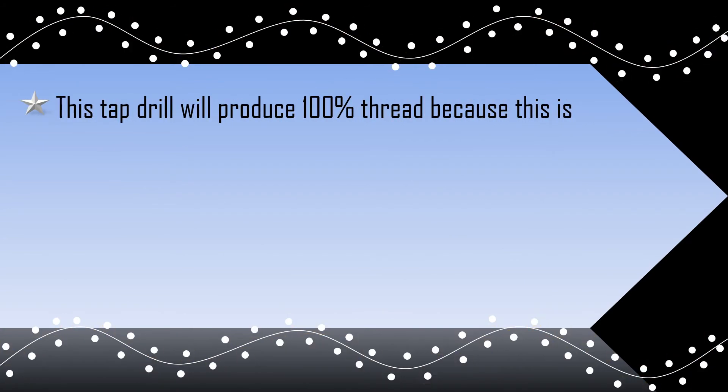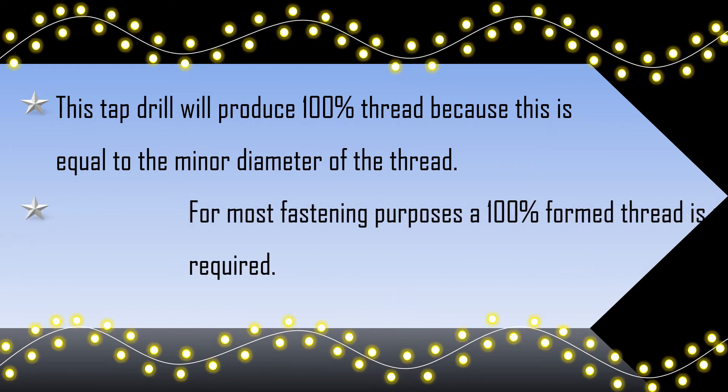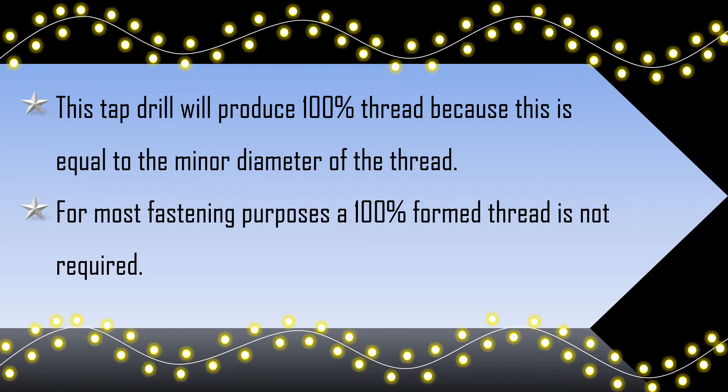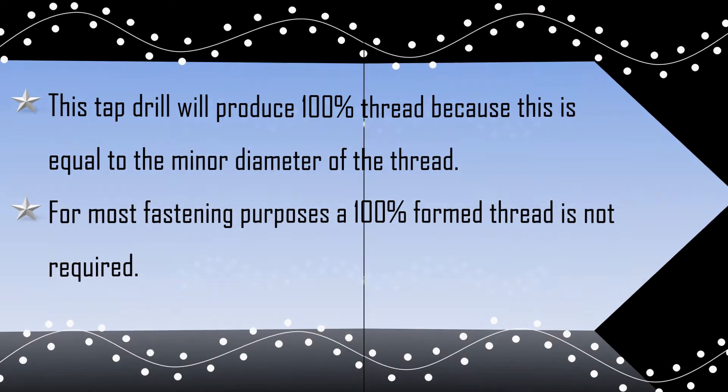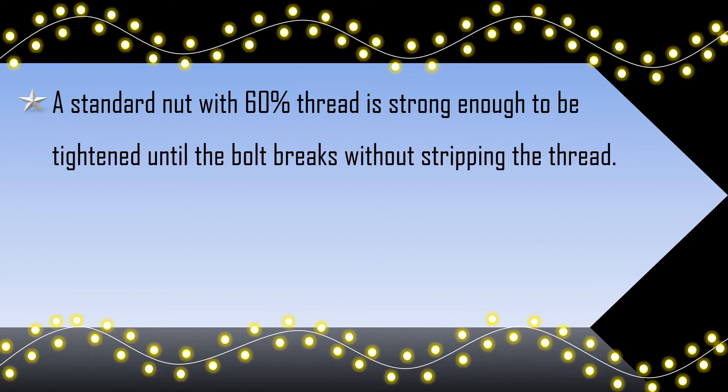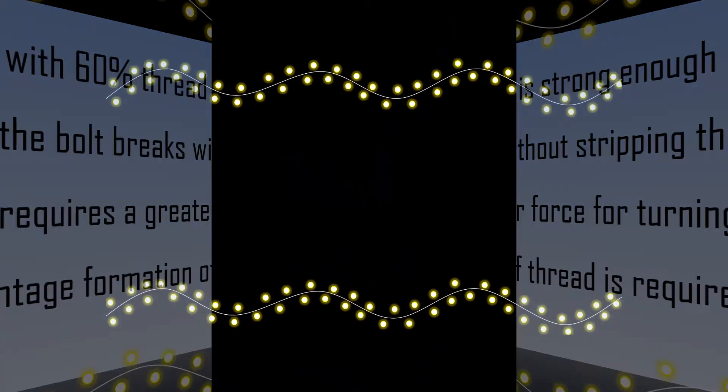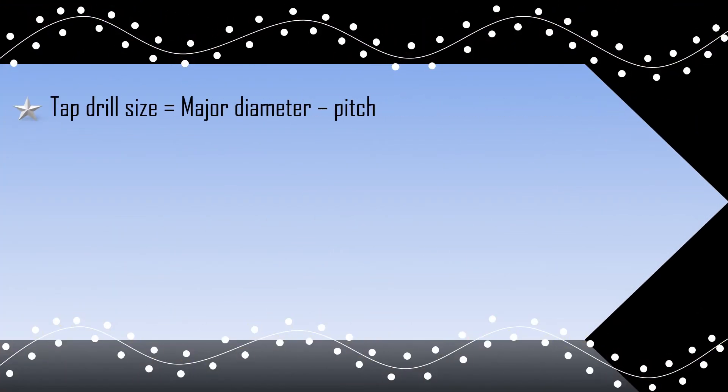This tap drill will produce 100% thread because this is equal to the minor diameter of the thread. For most fastening purposes, a 100% formed thread is not required. A standard nut with 60% thread is strong enough to be tightened until the bolt breaks without stripping the thread. Further, it also requires a greater force for turning the tap if a higher percentage formation of thread is required. Tap drill size equals major diameter minus pitch, equals 10 millimeters minus 1.5 millimeters, equals 8.5 millimeters.